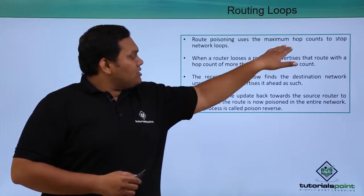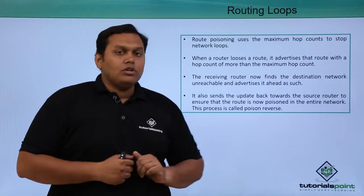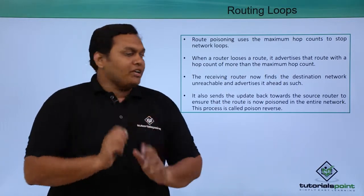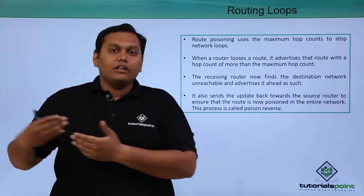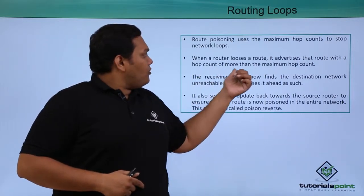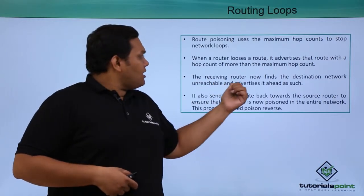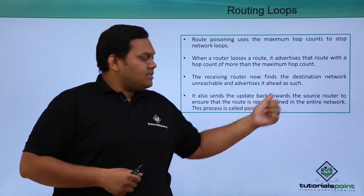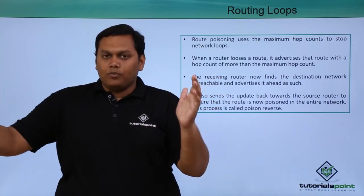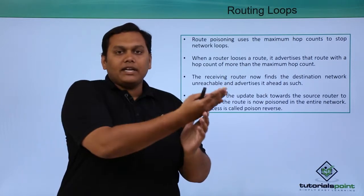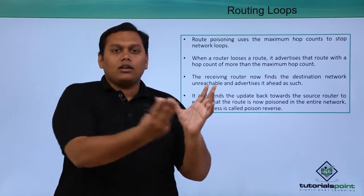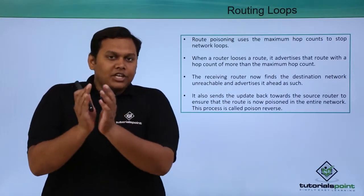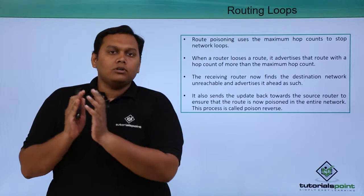The third check is route poisoning, which uses maximum hop counts to stop network loops. When a router loses a route, it advertises that it has lost connectivity by setting the hop count above the maximum, marking the network as unreachable. When router B loses connectivity to 5.0, it advertises the loss, so router C and router B will not form a loop. These are the three checks used in distance vector protocols to prevent routing loops.